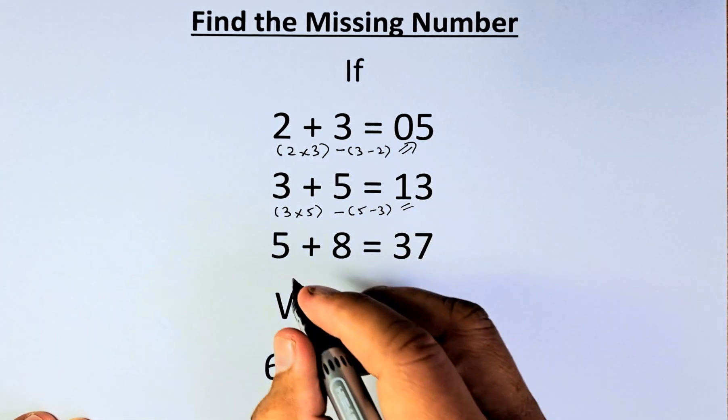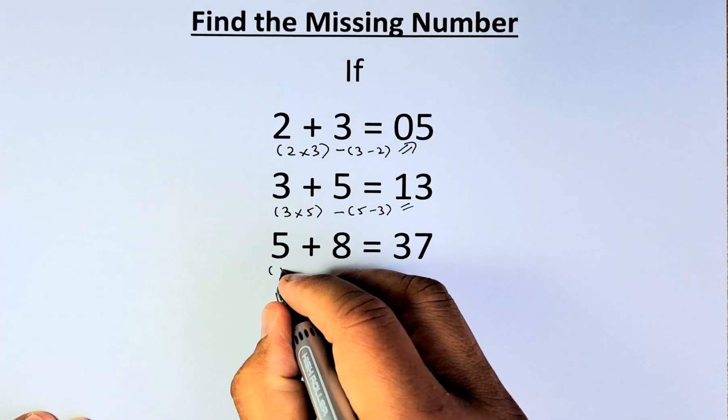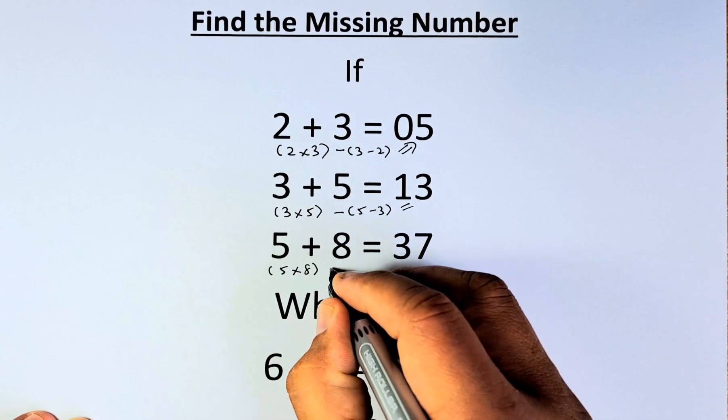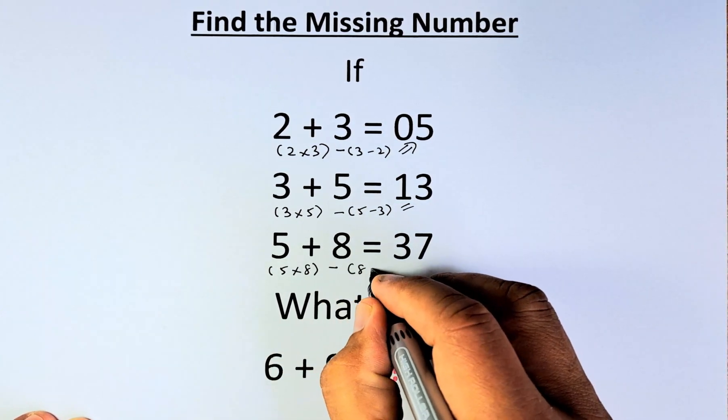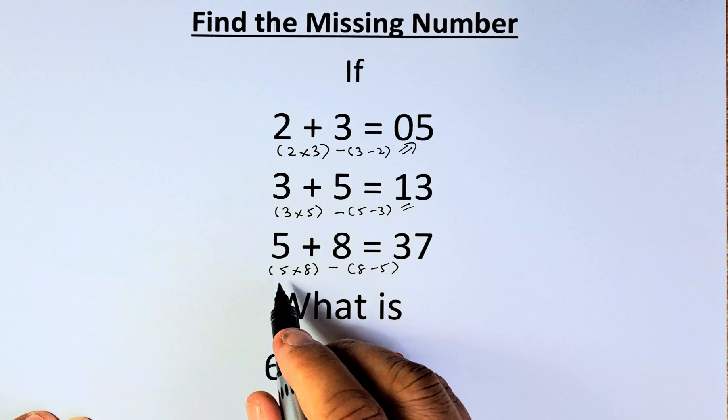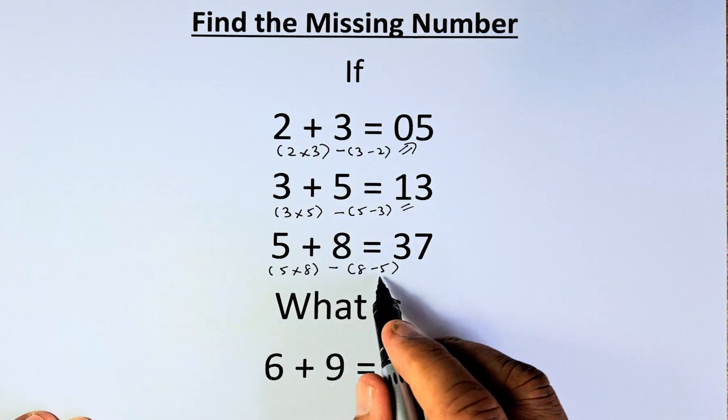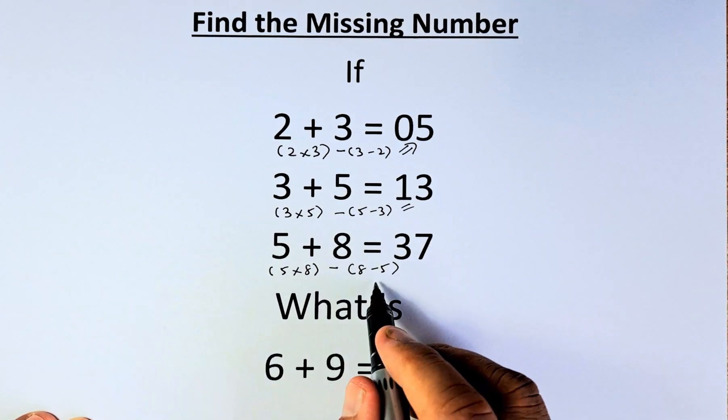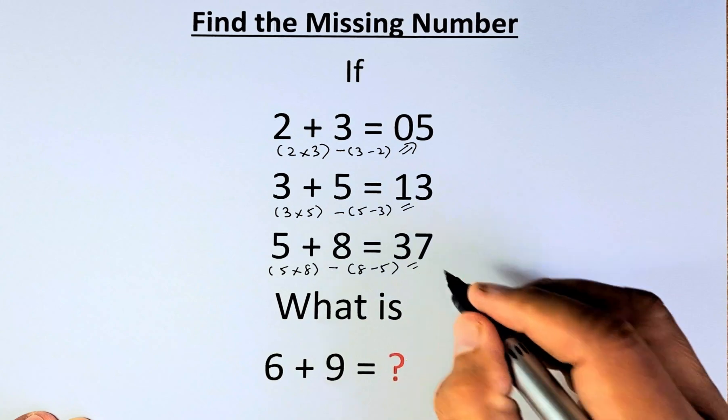The third example, we're going to do 5 times 8 minus 8 minus 5. So 5 times 8 is 40, 8 minus 5 is 3, so 40 minus 3 equals 37.